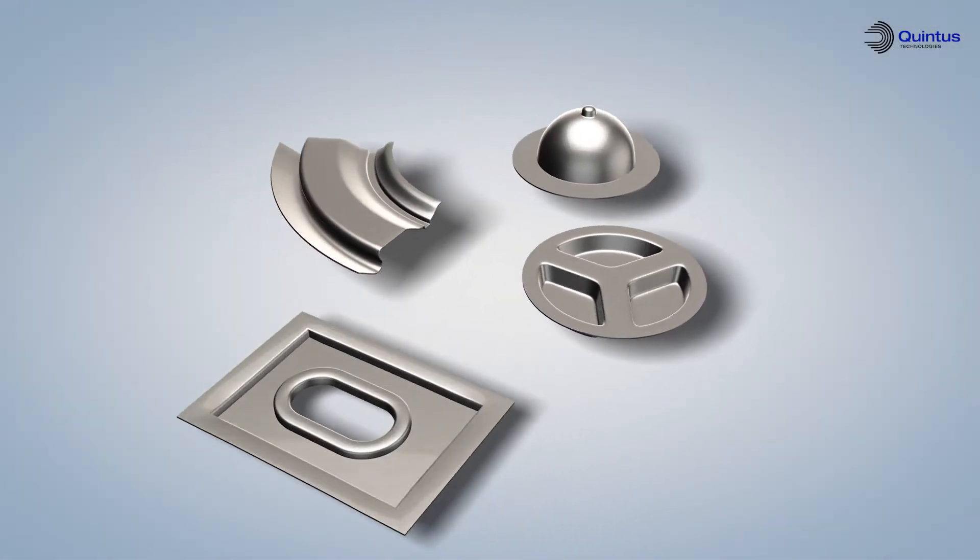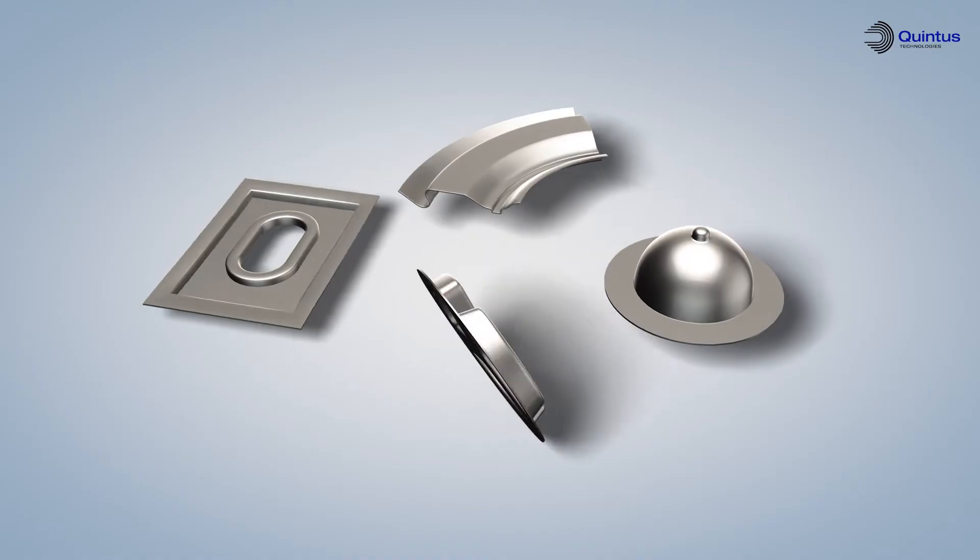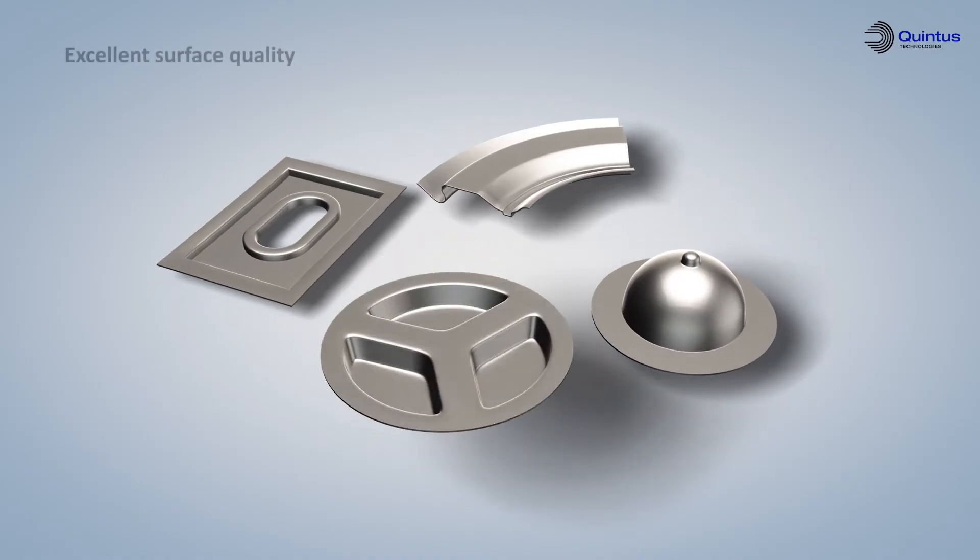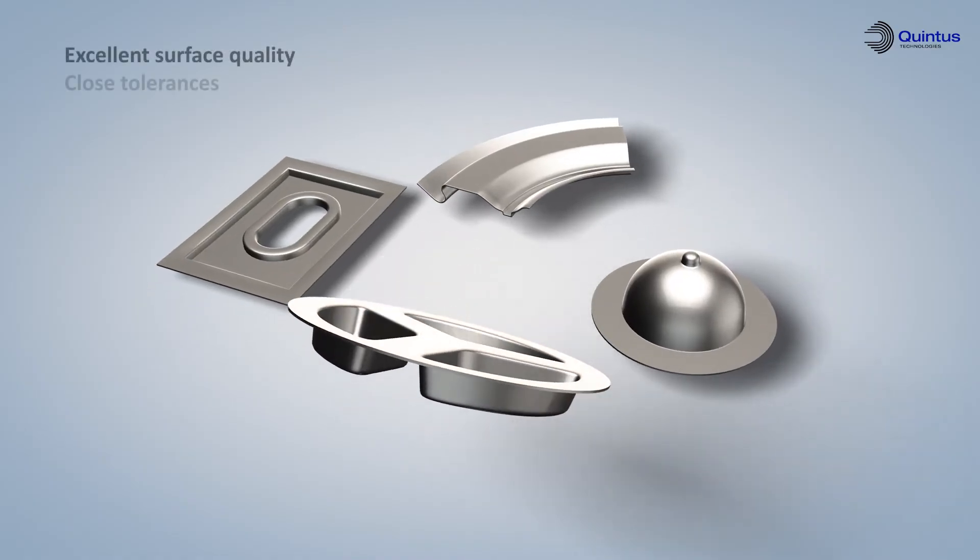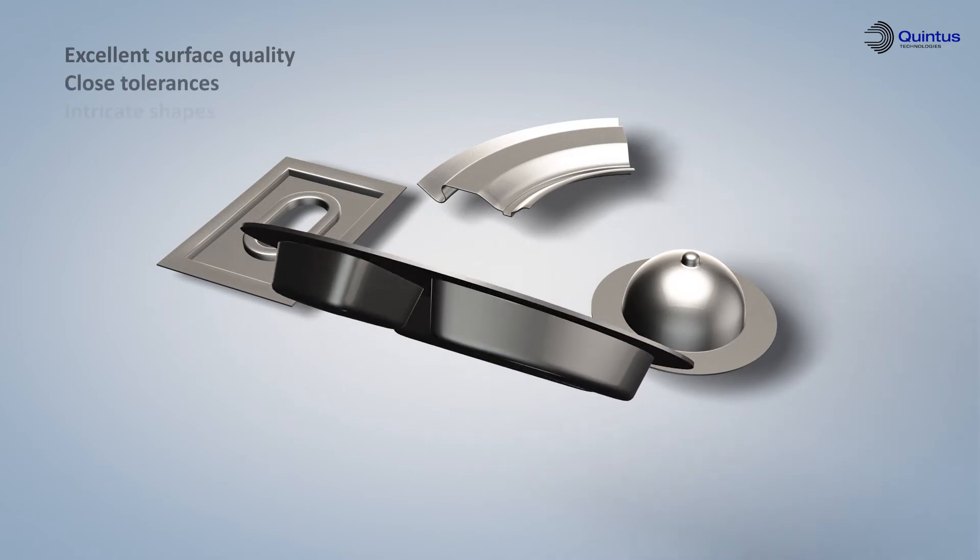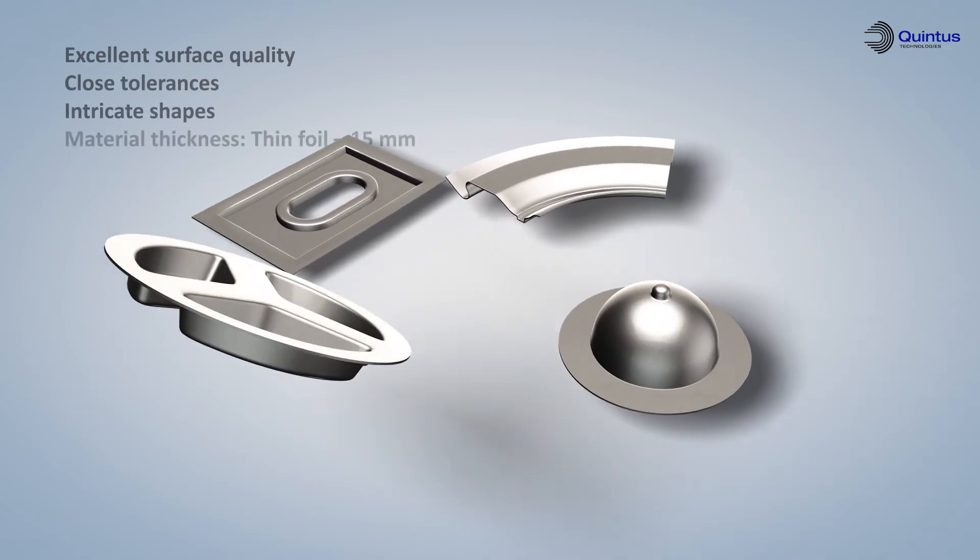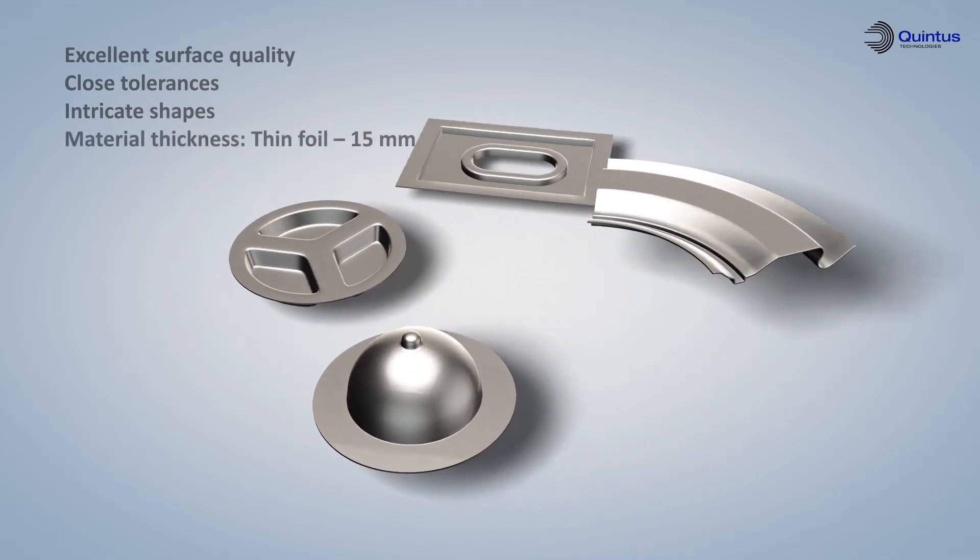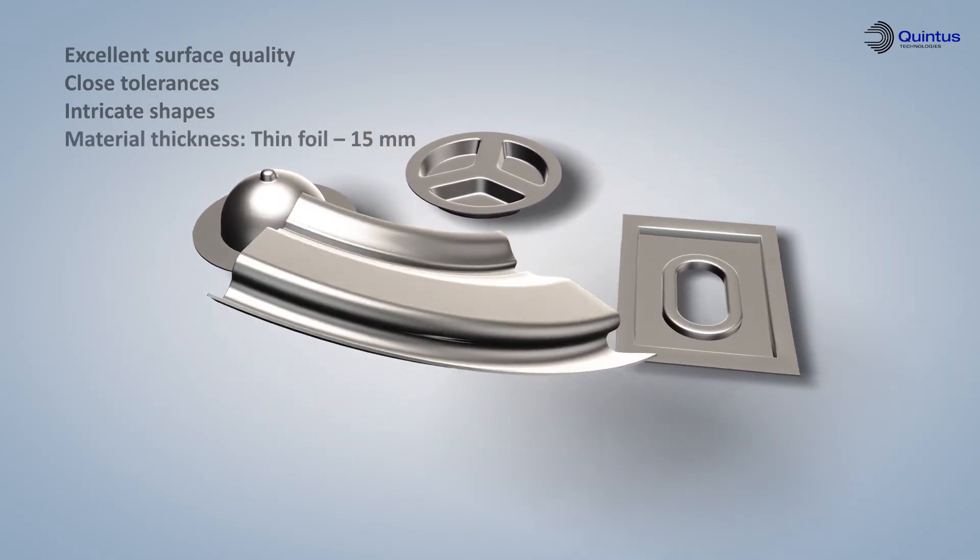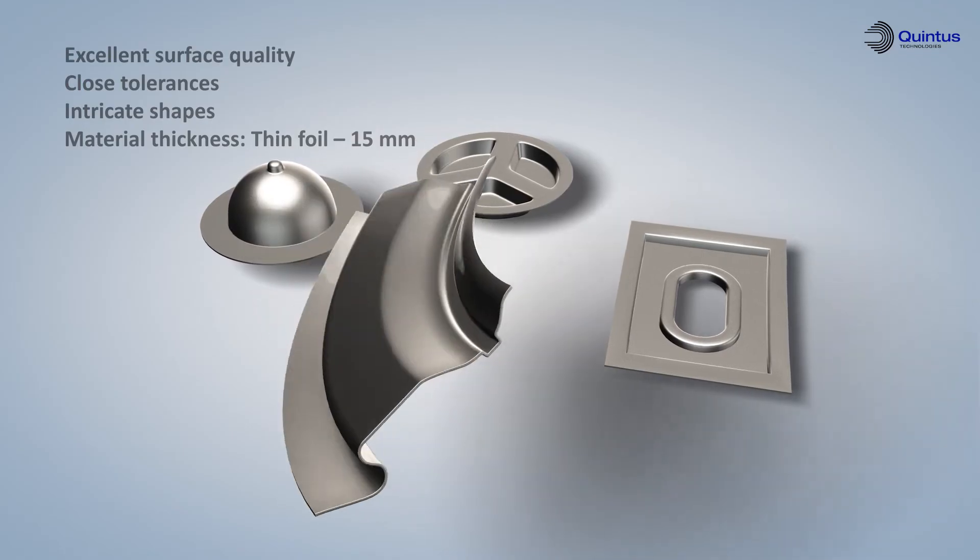In addition to excellent surface quality and close forming tolerances, intricate shapes and undercuts may be formed in material thicknesses from thin foil up to 15 millimeters. The flexible rubber diaphragm also allows production of several different parts in one and the same forming operation.